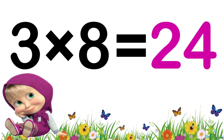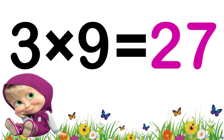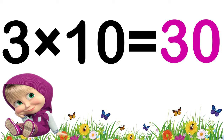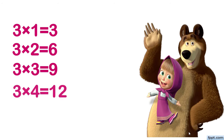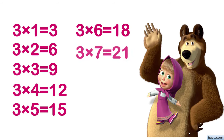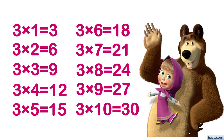Three nines are twenty-seven. Three tens are thirty. Three ones are three, three twos are six, three threes are nine, three fours are twelve, three fives are fifteen, three sixes are eighteen, three sevens are twenty-one, three eights are twenty-four, three nines are twenty-seven, three tens are thirty.